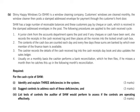Part B. Look at the requirements first. It says, for the cash cycle of SHW, identify and explain three deficiencies in the system — one mark per deficiency. Suggest controls to address each deficiency — again one mark each. And list the tests of control you could perform to assess if the controls are operating effectively — again one mark each. This question is really crying out for a columnar approach: one column identifying the deficiencies, next to that how you would correct them, and the final column how you would test the controls are actually operating.